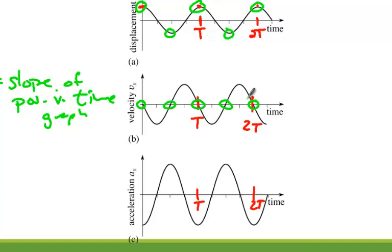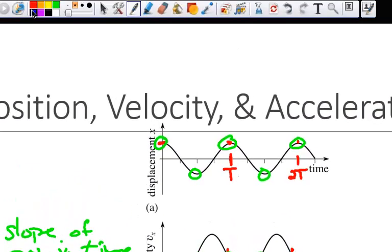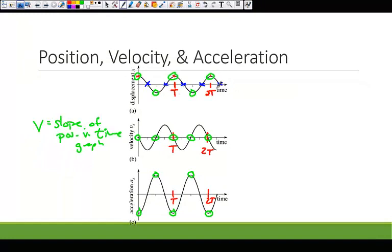One of the requirements of simple harmonic motion is that the maximum acceleration occurs when the displacement is a maximum. We notice that corresponding here as well — maximum acceleration values occur when displacement is at a maximum. When displacement is at a minimum, the velocities are at maximum values, and the accelerations are zero, because when the object is at the equilibrium position, there is no acceleration.